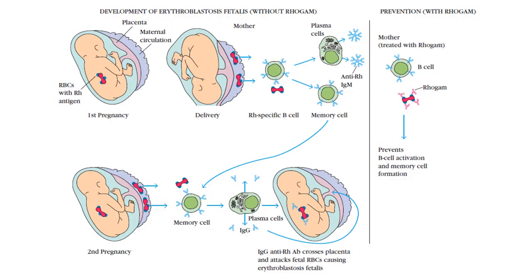Using this figure for better explanation: in the first pregnancy, the fetus has Rh positive blood group. This is the RBC carrying the antigen, representing the Rh positive fetus. This is the placenta and this is the maternal circulation. We know that the mother is Rh negative and the fetus is Rh positive. What happens during delivery is that these fetal RBCs cross the placenta and come into contact with the maternal circulation.